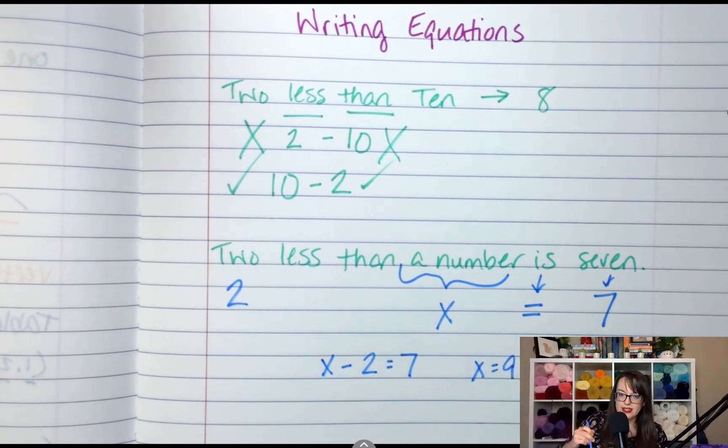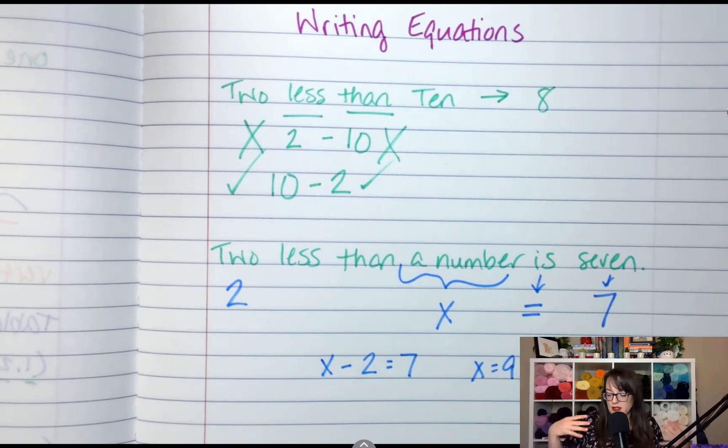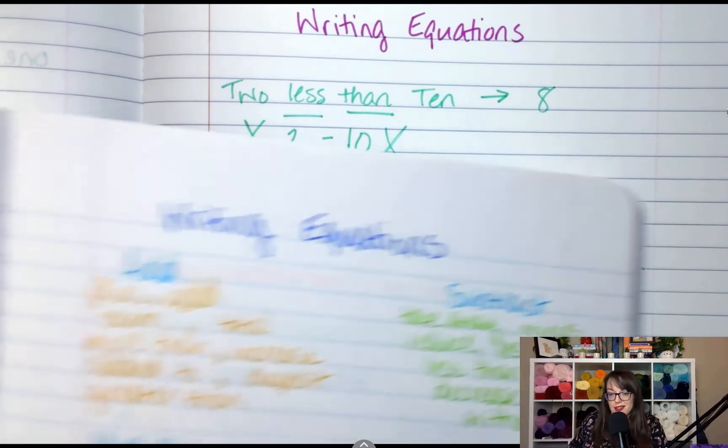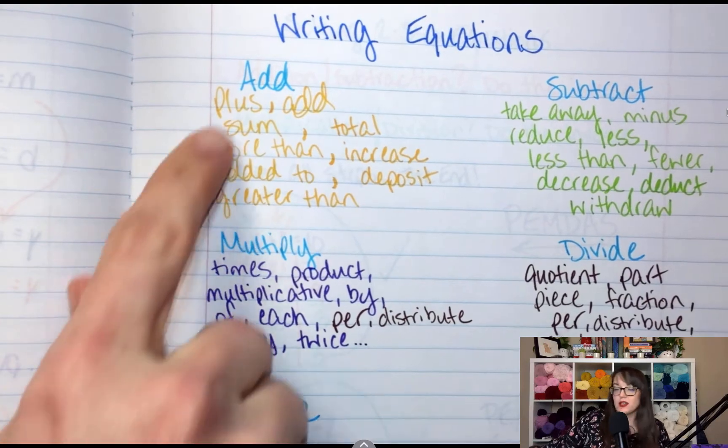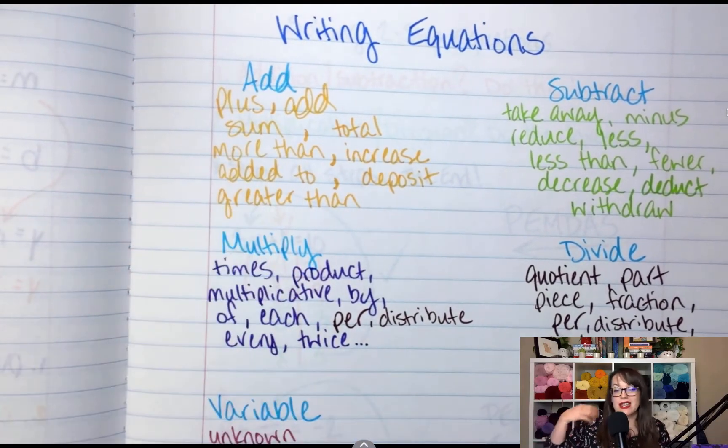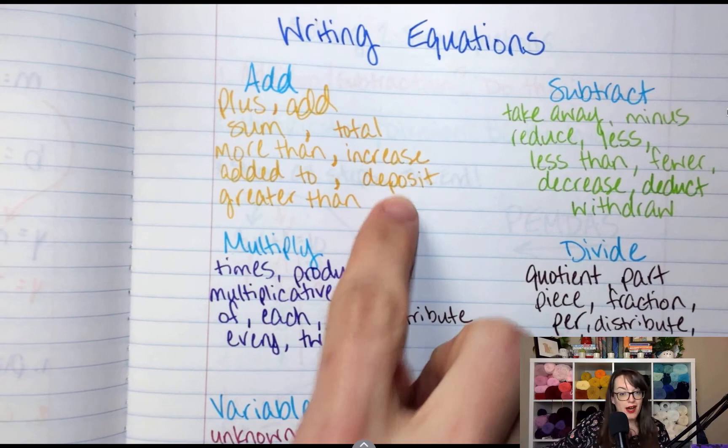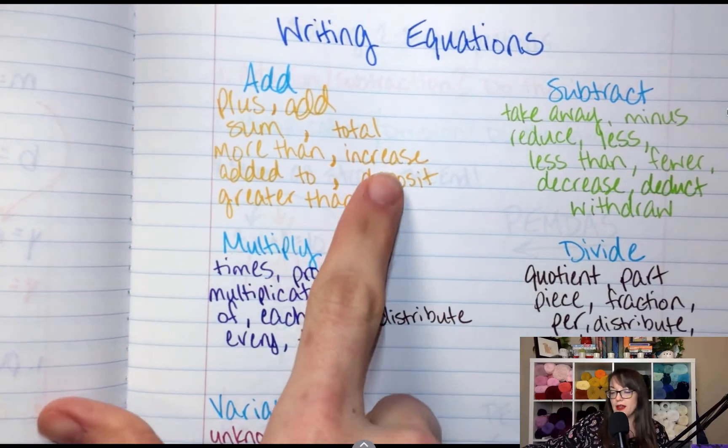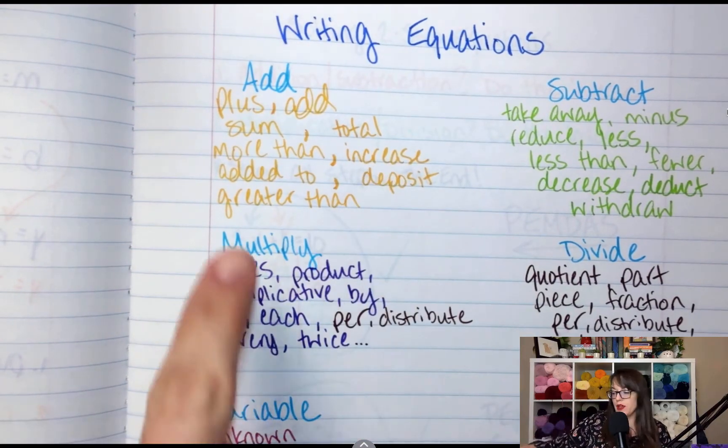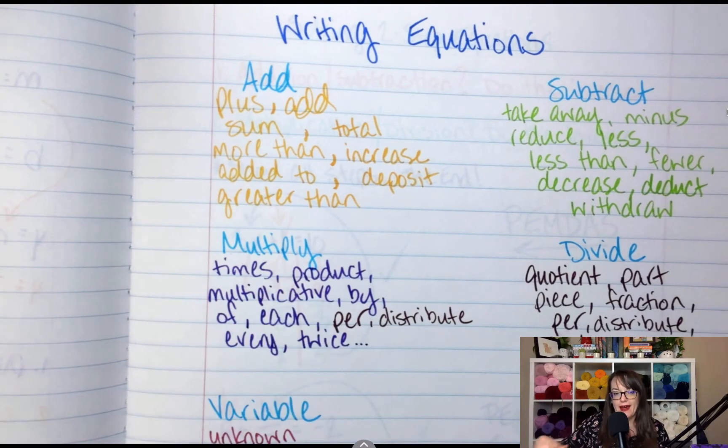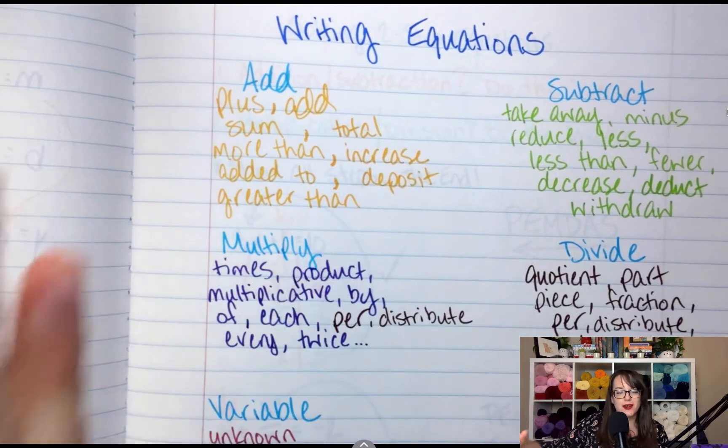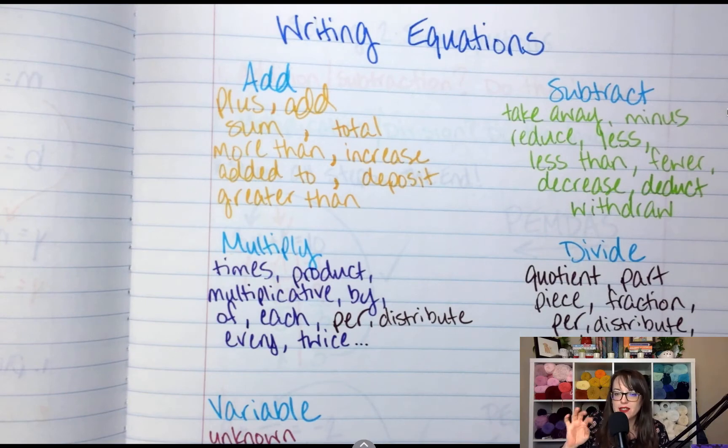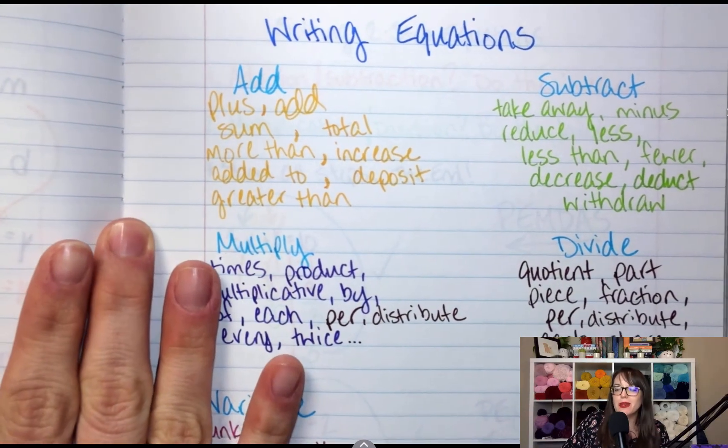Because going back to those one-step equations from 6th grade. Now, usually, we spend a day brainstorming words that mean things. I'm just going to show you our list that we've created over the past couple of years. So for adding, we've got, if it says greater than, added to, a deposit means your account goes up. Increasing, more than, total, sum. And then take these with a grain of salt. Sometimes they mean add. Sometimes they might mean multiply.